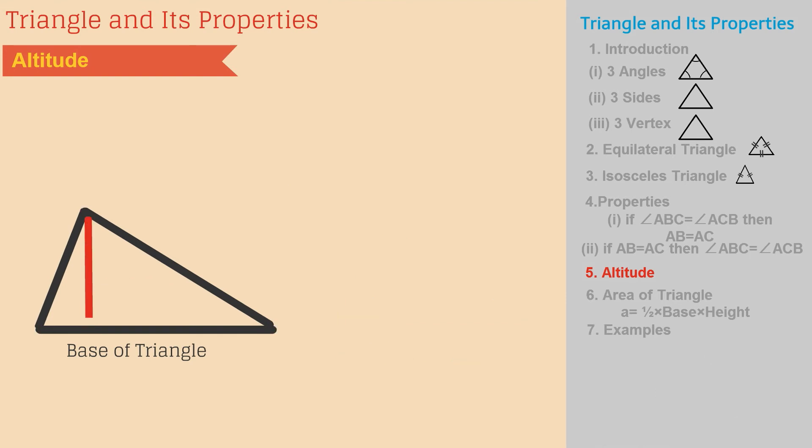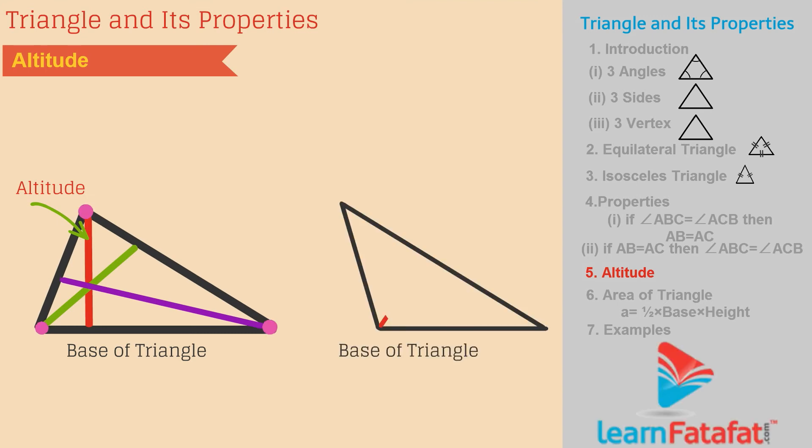In a triangle, it is possible to draw three altitudes from each vertex. Altitude can lie inside the triangle or outside of the triangle.